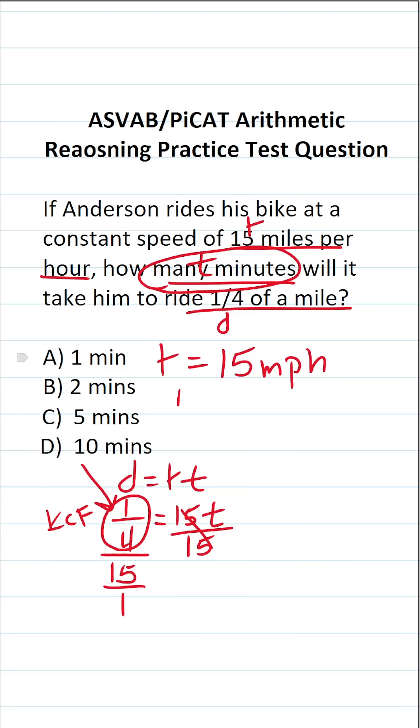We're going to keep one-fourth the same. So this becomes one-fourth. We're going to change from division to multiplication. And then we're going to flip this bottom fraction. So instead of being 15 over 1, it's going to be 1 over 15. When you multiply fractions, you just multiply straight across. 1 times 1 is 1. 4 times 15 is 60. So we can see that one-fourth divided by 15 over 1 is going to be 1 over 60 equals t.